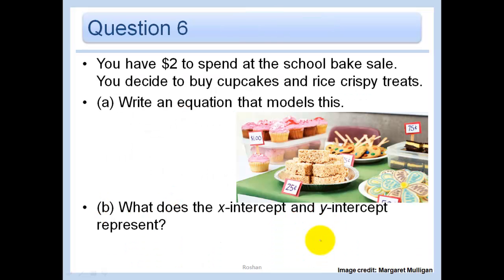Another word problem. You have $2 to spend at the school bake sale. You decide to buy cupcakes and Rice Krispie treats. Write an equation that models this. We have $2 to spend total. Cupcakes are $1 a piece and the Rice Krispie treats are 25 cents a piece. If we have x cupcakes and y Rice Krispie treats, $1 times x plus 25 cents times y is 2. I could just write x plus .25y equals 2.